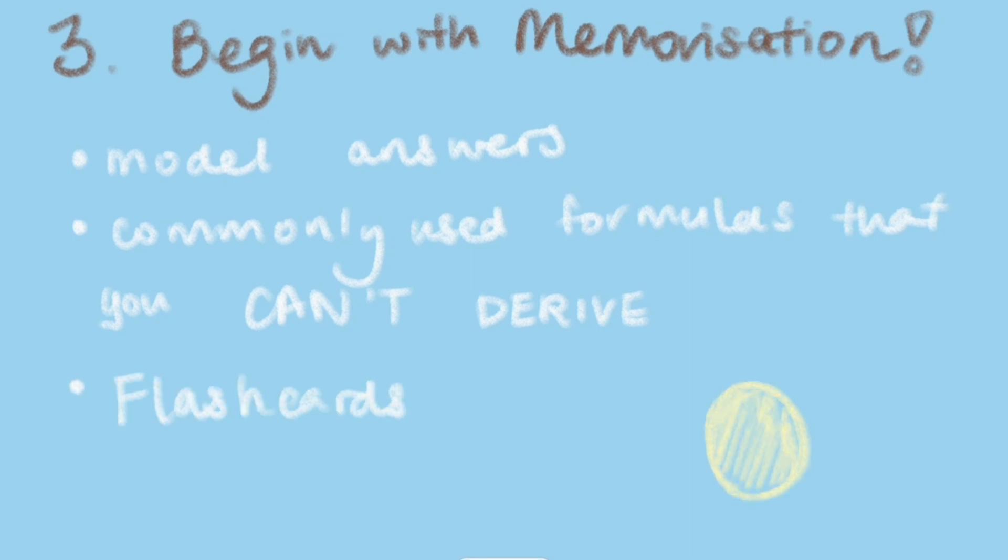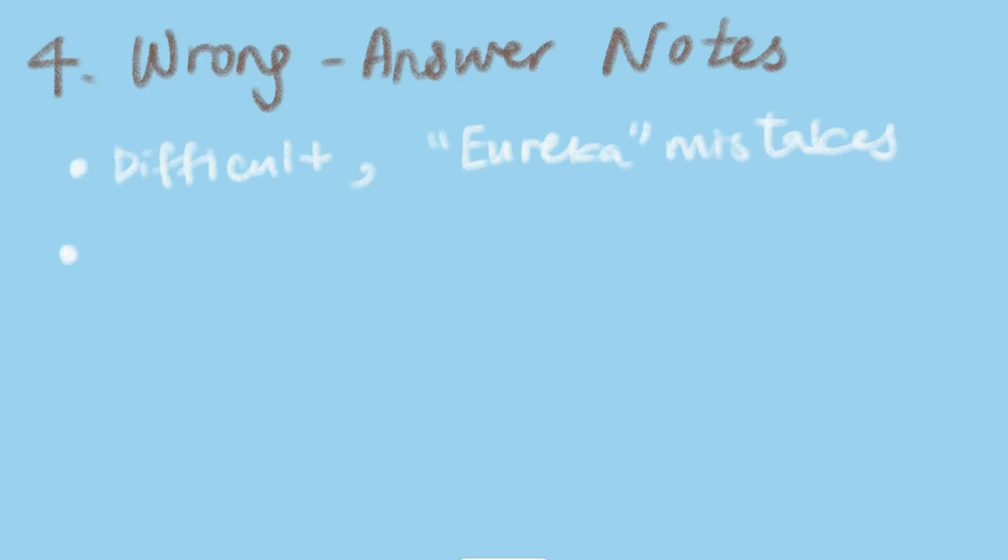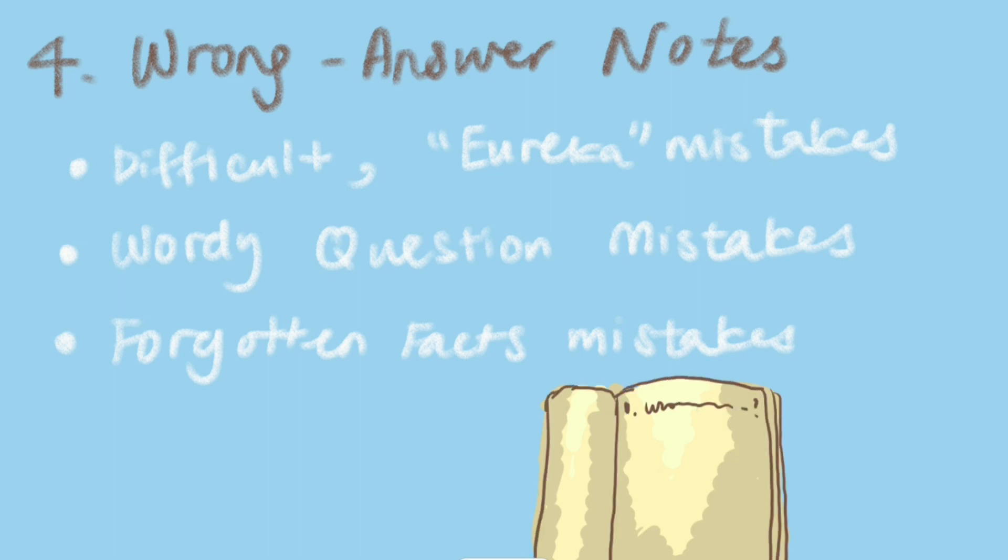The next part is using wrong answer notes. Once you have memorization down and some familiarization with past papers, you can start making wrong answer notes. I made notes of things I got wrong, like difficult questions where I had a eureka moment, wordy questions where I didn't memorize all the keywords, or facts that I forgot. I compiled it into one notebook with all my mistakes. I also put down very common questions so they would help me save time in future exams. These wrong answer notes were my holy grail for physics. I was looking at this the day before and hour before exams, and they helped me a whole lot.